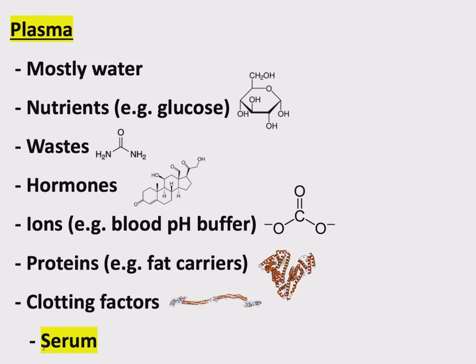This brings us to another term you'll see when talking about blood and blood products, and that's the term serum. Serum is basically plasma that doesn't clot. The key terms define serum as plasma without the coagulation factor. So when these things have been removed or destroyed, we call this serum instead of plasma.